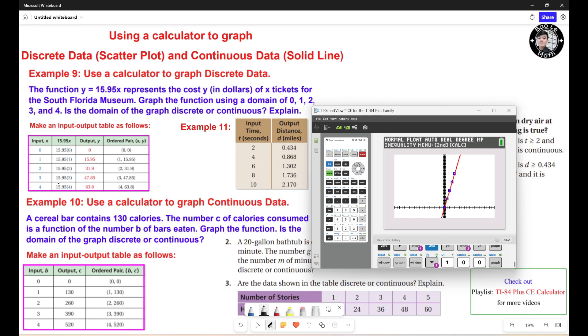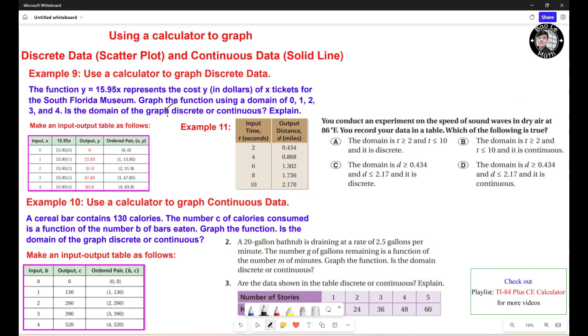Now, question: Is the domain of the graph discrete or continuous? Explain. You're gonna see that the number of tickets cannot be 1.1, cannot be 3 over 5, something like that. It should be a whole number. So it starts from 0, one, two, three, four, five, something like that. So the domain of the graph is discrete. It could be this one.